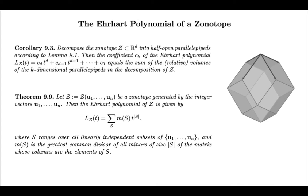Let me remind you that in the previous video, we explained corollary 9.3. Namely, if we have a lattice zonotope for which we have a decomposition into half-open parallel pipettes, and we explained how that works, then we can compute the Ehrhart polynomial of the zonotope by finding the relative volumes of the various parallel pipettes in this decomposition.